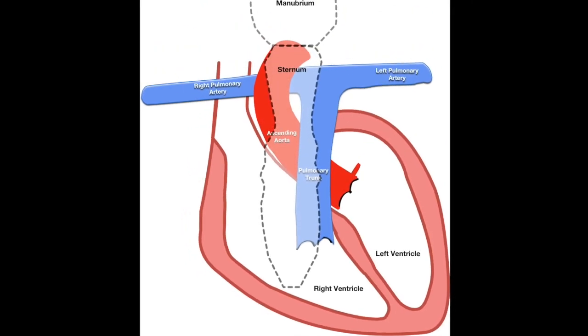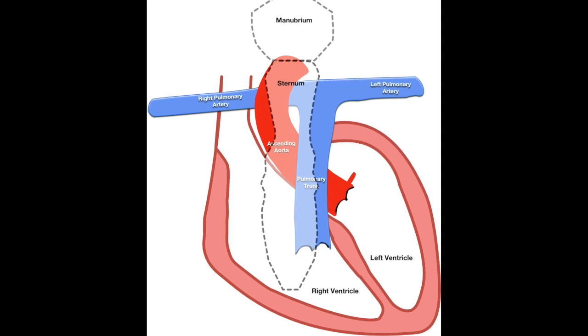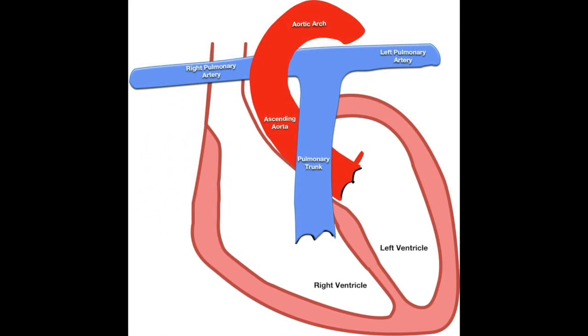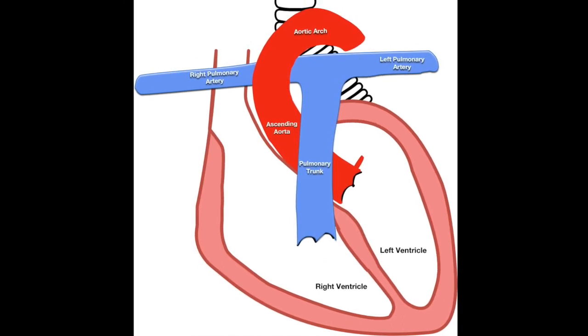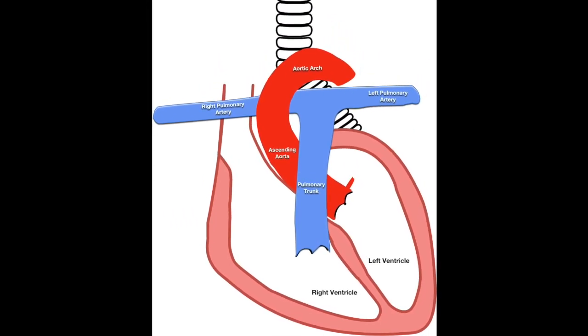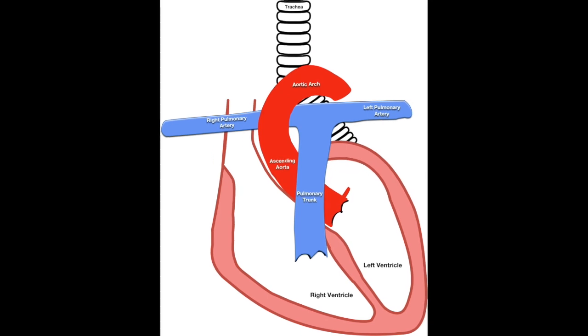The anatomical ascending aorta ends just posterior to the sternal angle in the transthoracic plane. After this point, it continues as the arch of the aorta. The arch ascends superiorly, posteriorly and slightly to the left. It crosses in front of the trachea and reaches its apex to the left of the trachea and esophagus. It then descends further to end in the transverse thoracic plane.